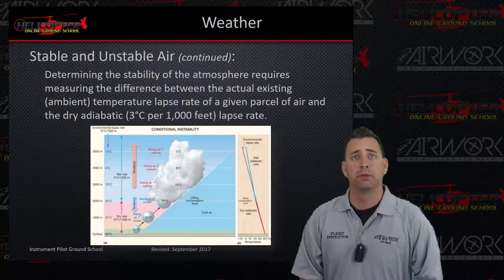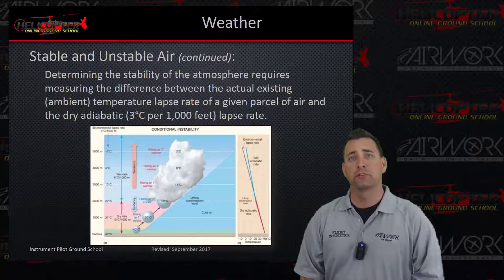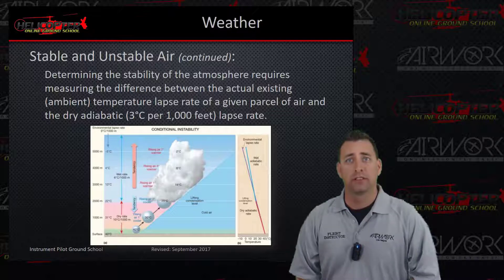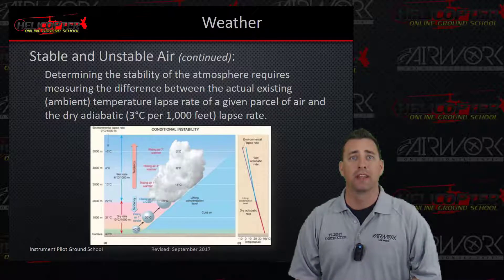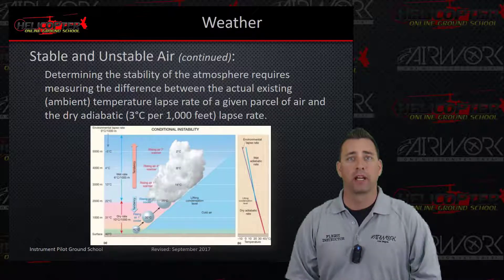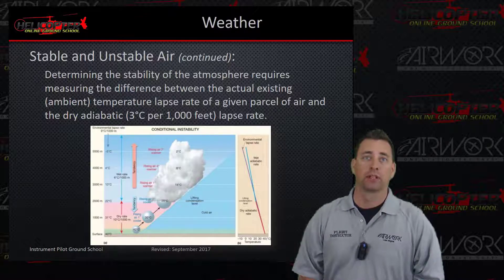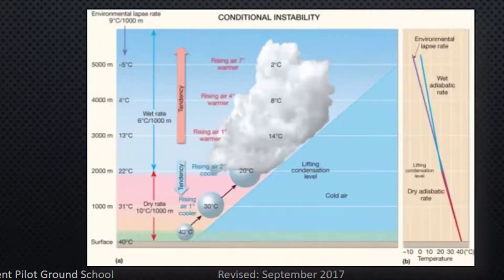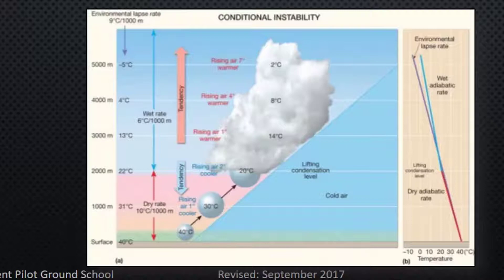Determining the stability of the atmosphere requires measuring the difference between the actual existing temperature lapse rate of a given parcel of air and comparing that to the dry adiabatic lapse rate, or 3 degrees per 1,000 feet. The bigger the divergence between the dry adiabatic and the actual existing ambient temperature lapse rate, the more unstable the atmosphere is. The closer they are together, the more stable.